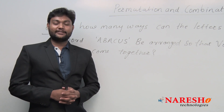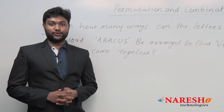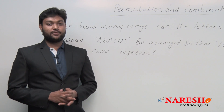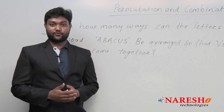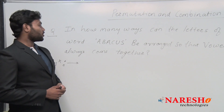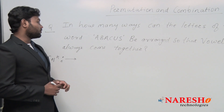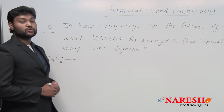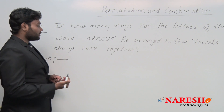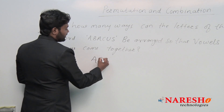Warm greetings to one and all. This is Akshay from Naresh IT. Today in this video, we are going to have a question on permutation and combination. The question is: in how many ways can the letters of the word ABACUS be arranged so that vowels always come together?